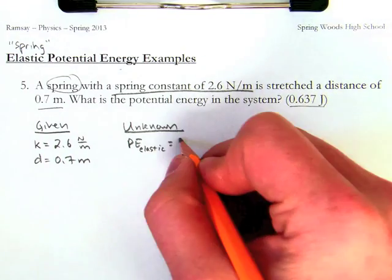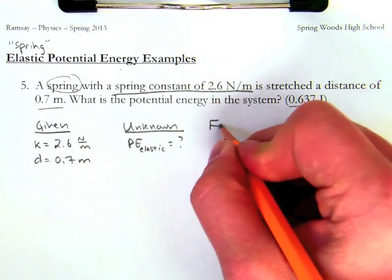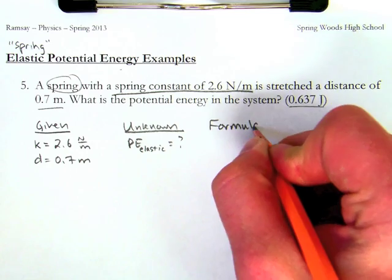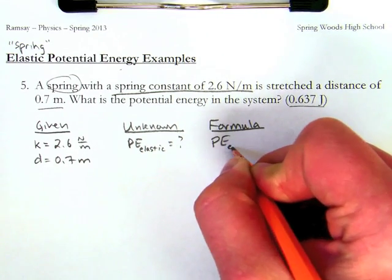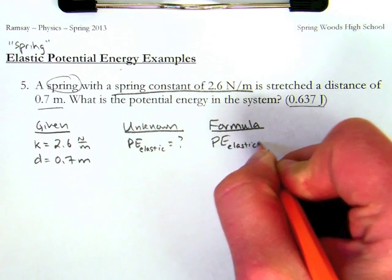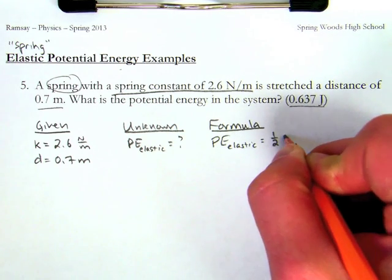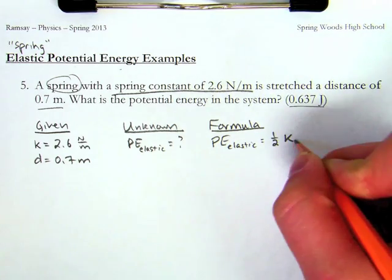So my formula is potential energy equals one-half of k, which is the spring constant, times x, which is the distance, squared.